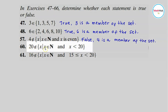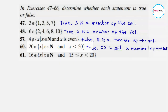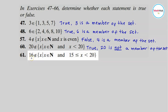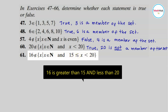Is 20 a member of this set where x is a natural number less than 20? Twenty is not less than itself, so 20 is not part of this set — therefore the statement '20 is not a member' is true. For number 61: 16 is not a member of the set of numbers greater than or equal to 15 but less than 20. Sixteen is actually greater than 15, so it belongs to this set — meaning this statement is false.